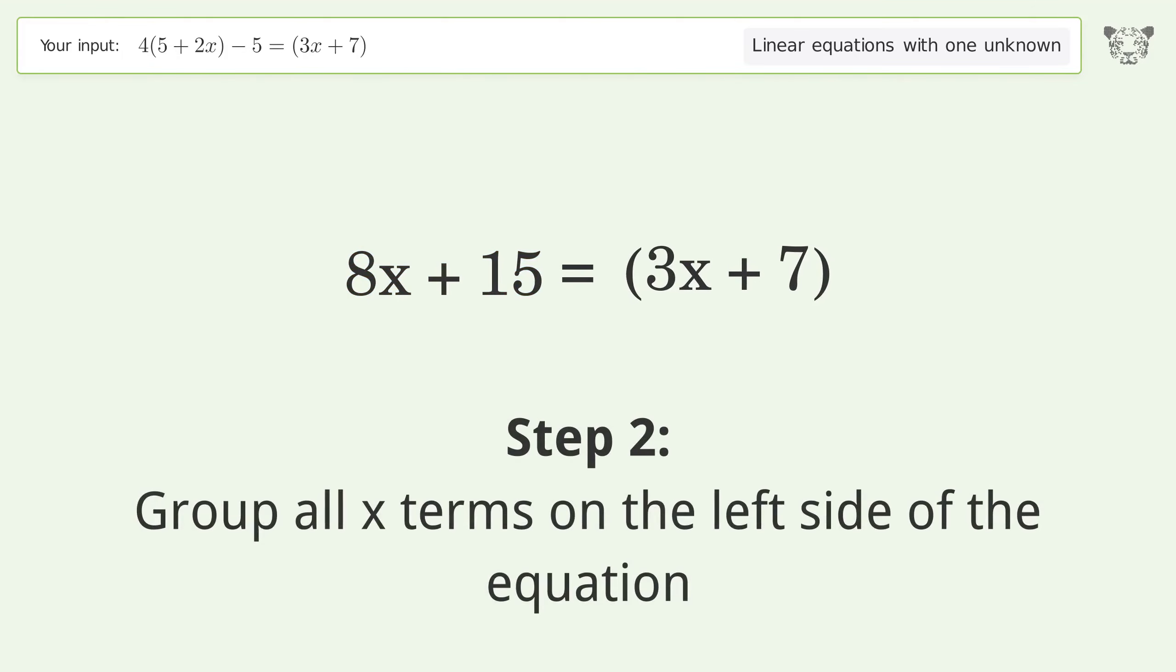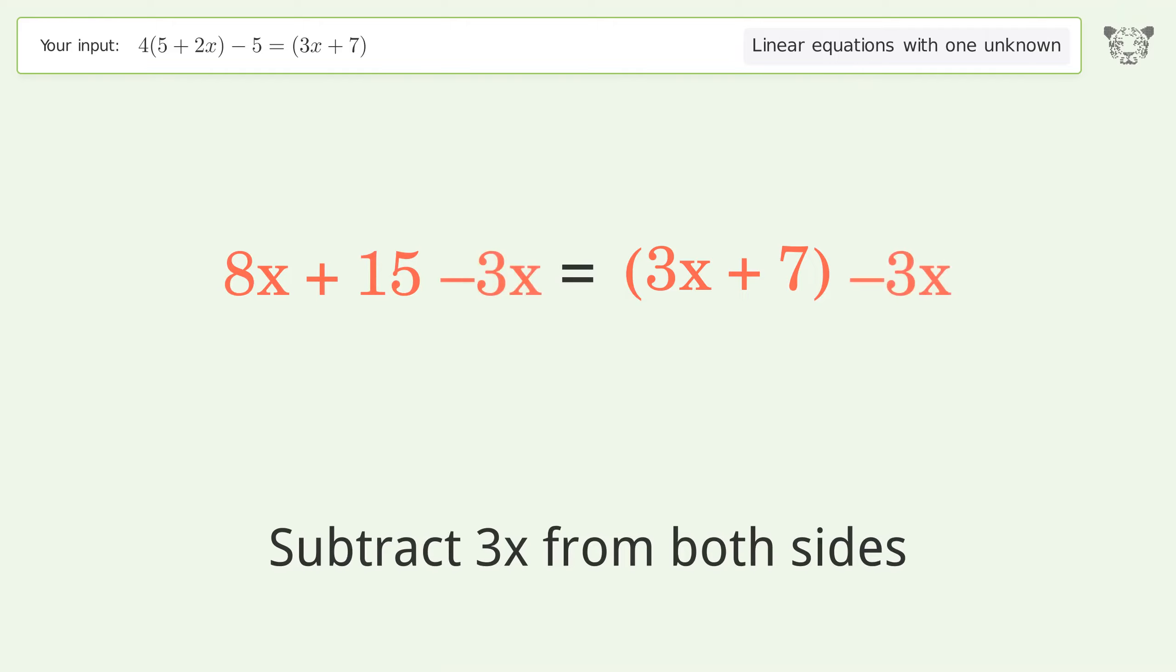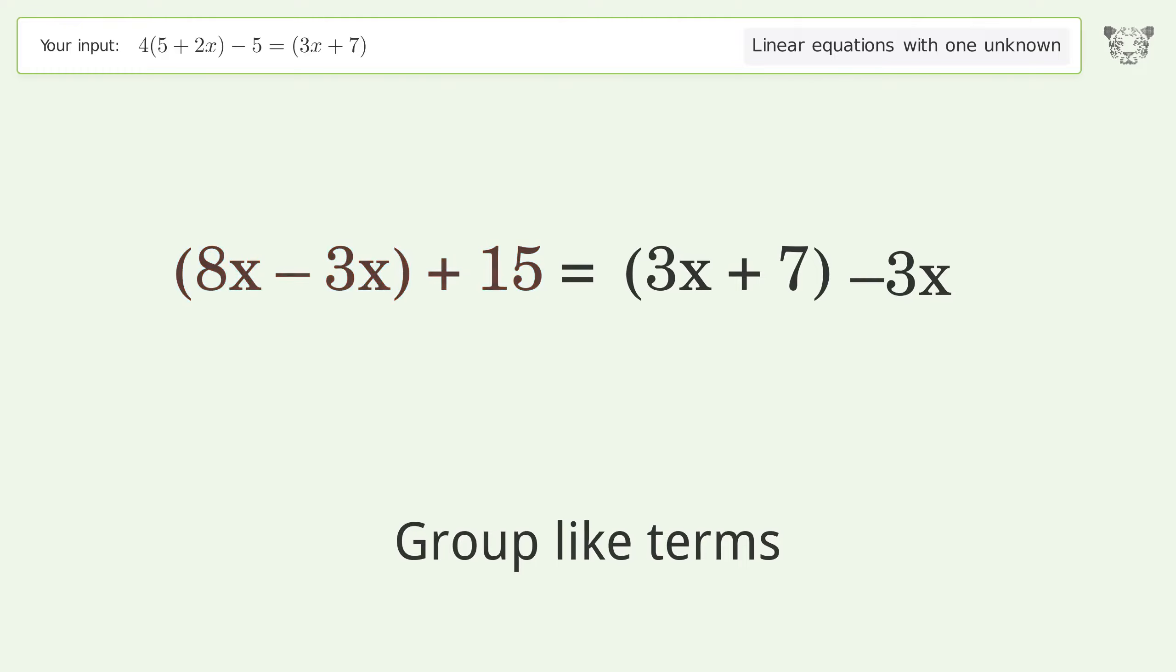Group all x terms on the left side of the equation. Subtract 3x from both sides. Group like terms. Simplify the arithmetic.